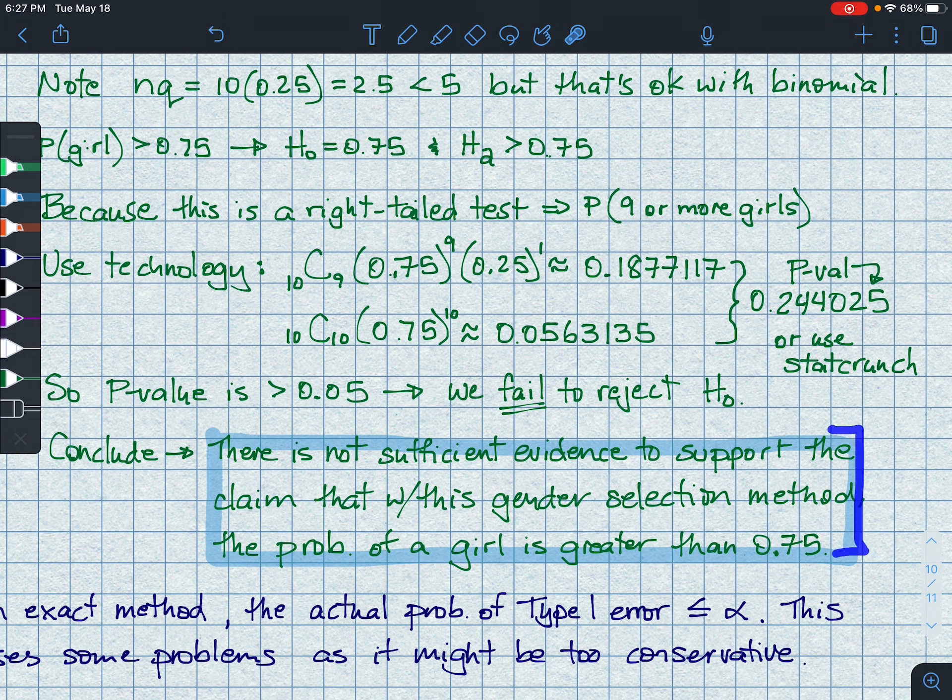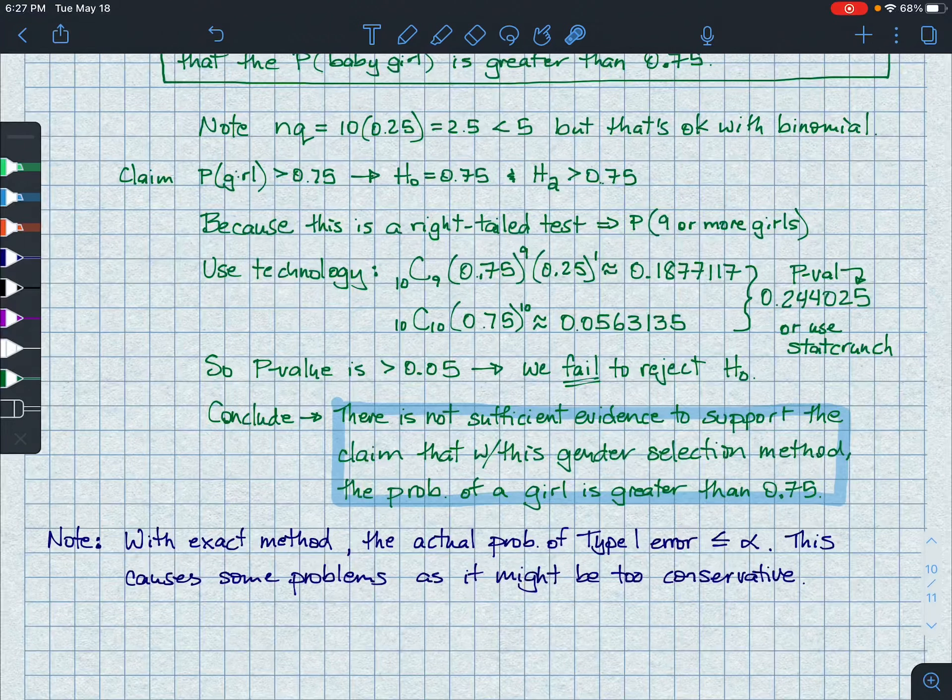There is not sufficient evidence to support the claim that with this gender selection method, the probability of a girl is greater than 0.75. All right. So a little bit different than our previous problems.